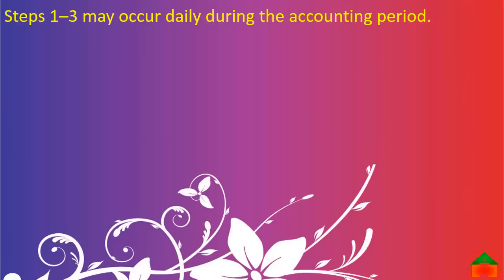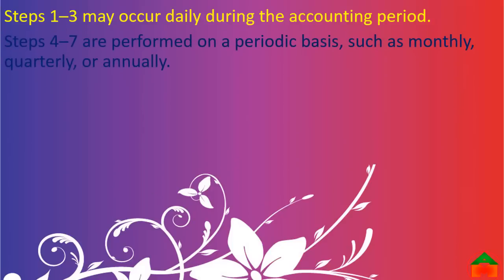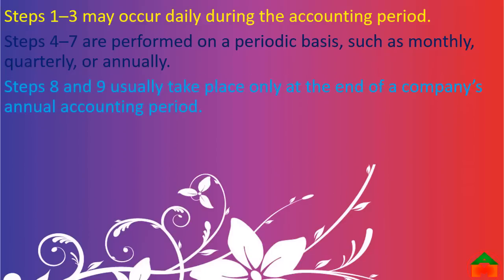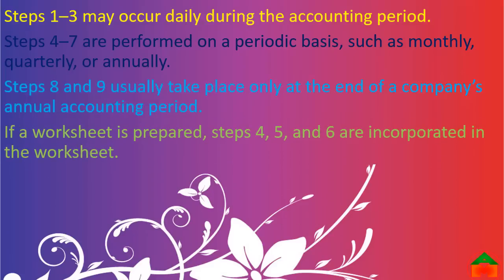Steps one, two, and three may occur daily during the accounting period. Steps four to seven are performed on a periodic basis, such as monthly, quarterly, or annually. Steps eight and nine usually take place only at the end of a company's annual accounting period. If a worksheet is prepared, steps four, five, and six are incorporated in the worksheet.